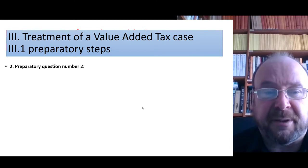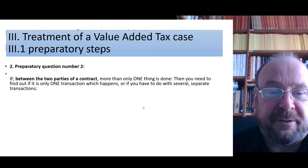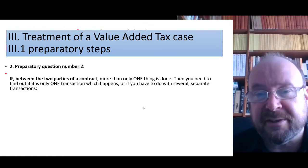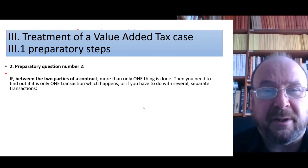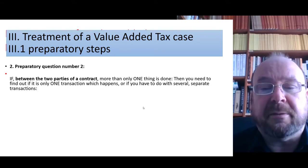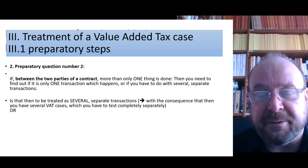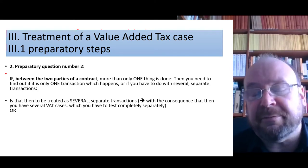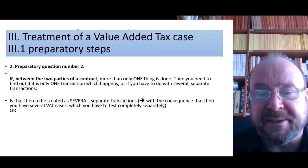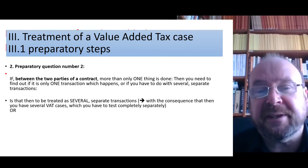Once you have established the parties, the next question is: between these two parties, if more than one thing is done, is it only one thing or a multitude of different things? If it is a multitude, you have not just one case but two, three, or four transactions to test. If it turns out that everything is only one transaction from the perspective of value-added tax, then you have to test only that one transaction.